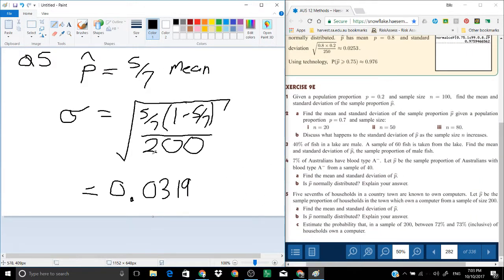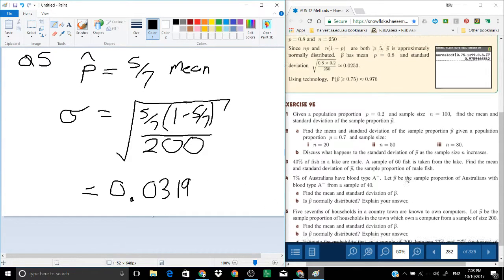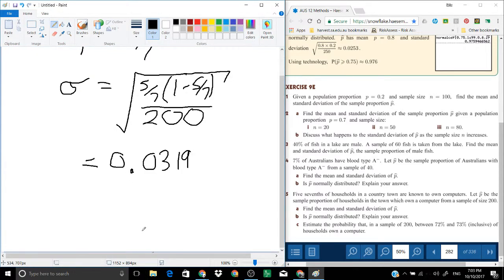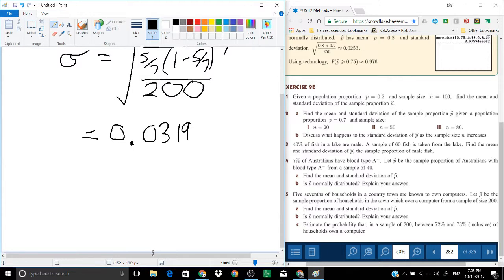Is it normally distributed? Let's do this test. We need to know what NP is. NP is 200 times by 5 sevenths. That's basically 1000 over 7. That is well and truly above what we need.